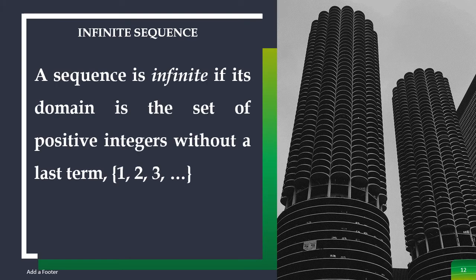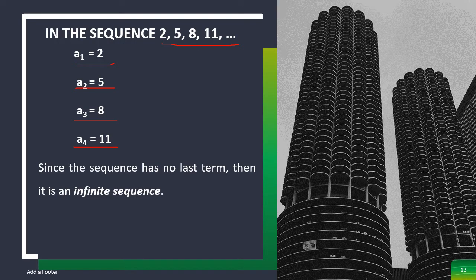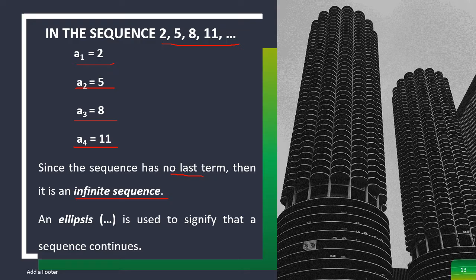What is an infinite sequence? A sequence is infinite if its domain is the set of positive integers without a last term. In the sequence 2, 5, 8, 11, and so on — our first term is 2, second term is 5, third term is 8, fourth term is 11. The sequence has no last term, so it is called an infinite sequence. We know it has no last term because of the presence of ellipses, denoted by three dots, which signify that the sequence continues.